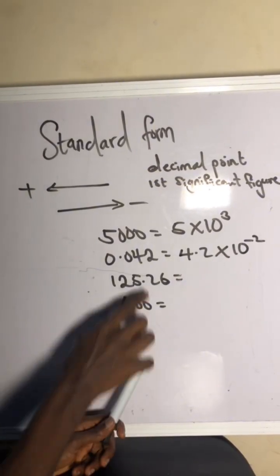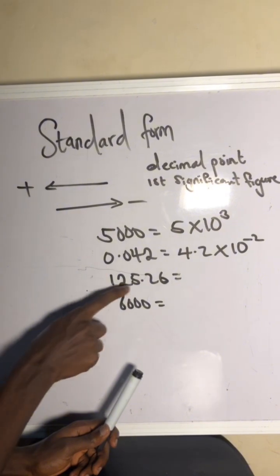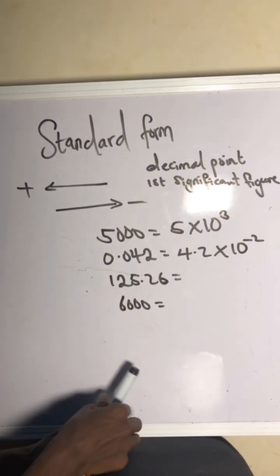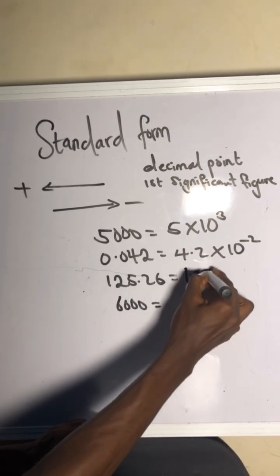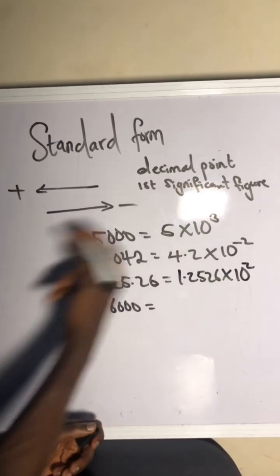And the next one is, this is my decimal point. Where is my first significant figure? This is it. So drop the point. Let's go 1, 2, at the back of the first significant figure. And that's 1.2526 times 10 to the power of positive 2, because I move towards the left.